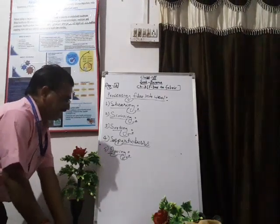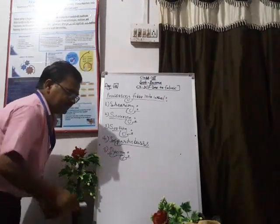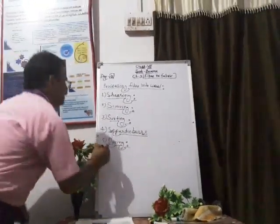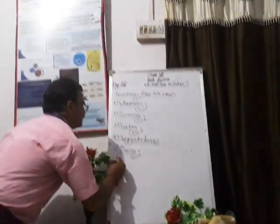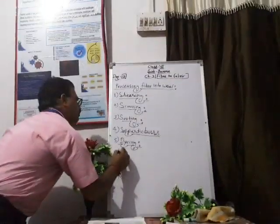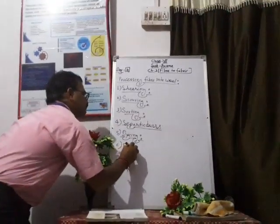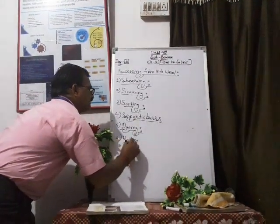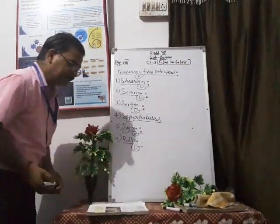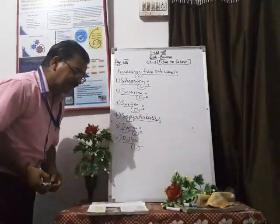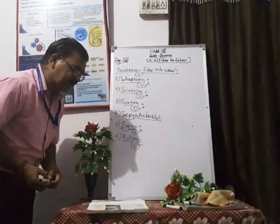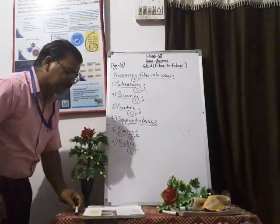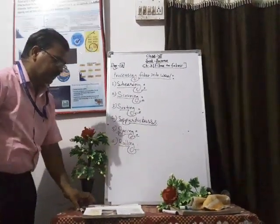The sixth step is rolling. Rolling means the fibers are strengthened, formed, and rolled into yarn.